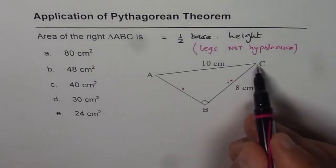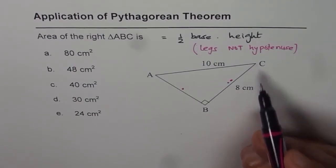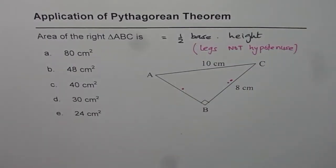The third side, in this case AC at 10 cm, is the hypotenuse which will not be used to calculate area of the triangle. That is the first thing I want to highlight.